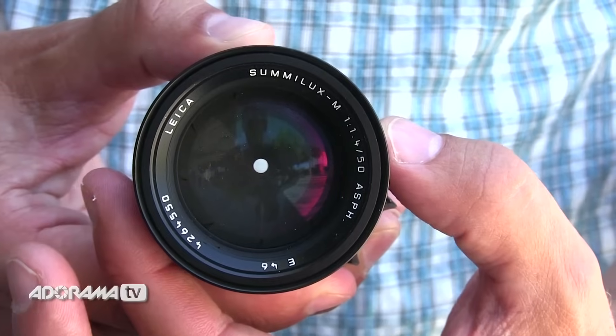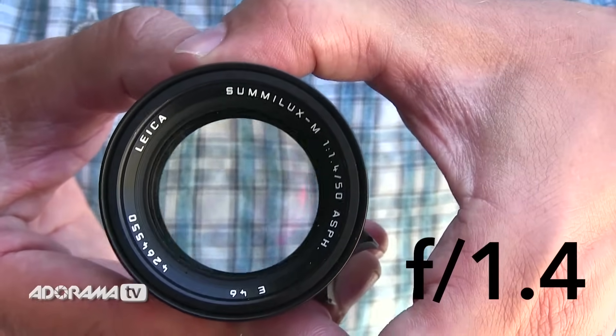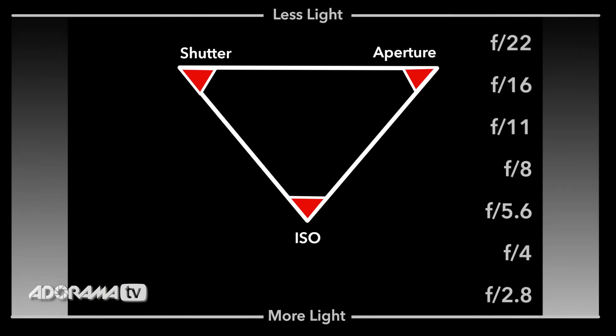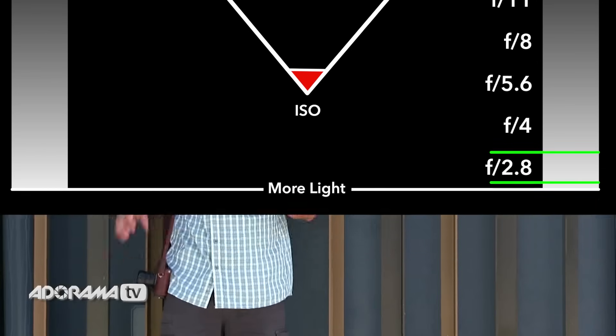I know that seems backwards but that's how it is. f16 is really small, f1.4 is really big. It's not important that you know what those numbers mean right now — we're going to explain that in a future episode. But right now it's important to understand that a big number means a small opening and a small number means a big opening. A big opening means lots of light is coming through and a small opening means not very much light. Our aperture controls the quantity of light coming into our camera.